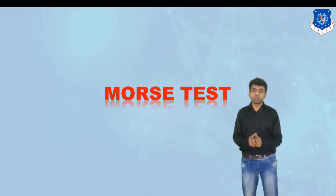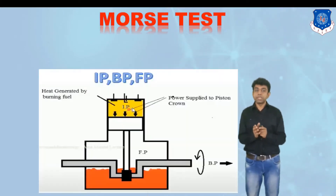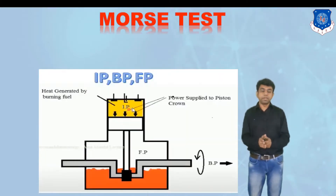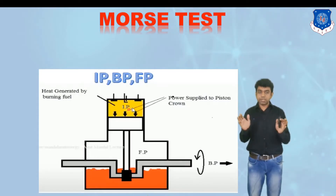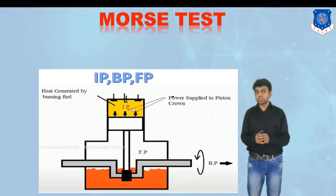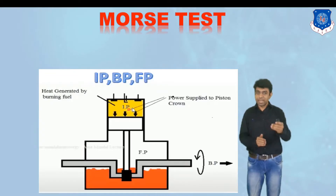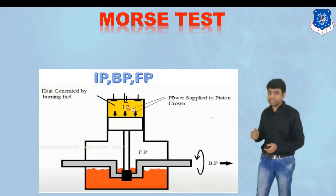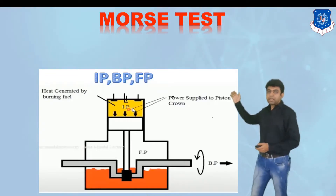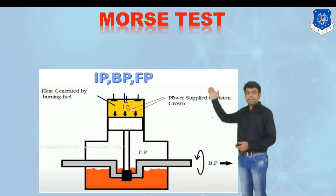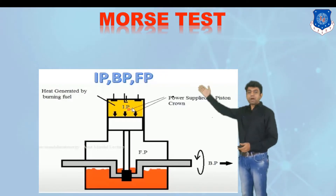The Moore's Test is used to find out the indicated power in the case of a multi-cylinder engine. First, let us clarify the concept of the different powers associated with the engine, and then we will proceed with the different tests related to Moore's.